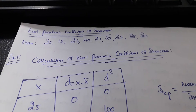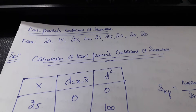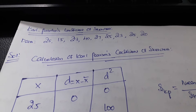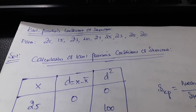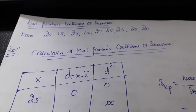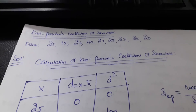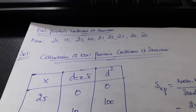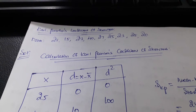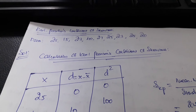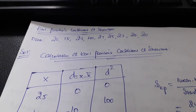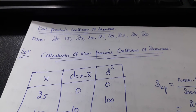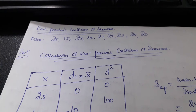To calculate skewness, we need to know how to calculate the measure of central tendency and the measure of dispersion. The data is given here through which we can calculate the coefficient. The heading would be: Calculation of Pearson's Coefficient of Skewness.